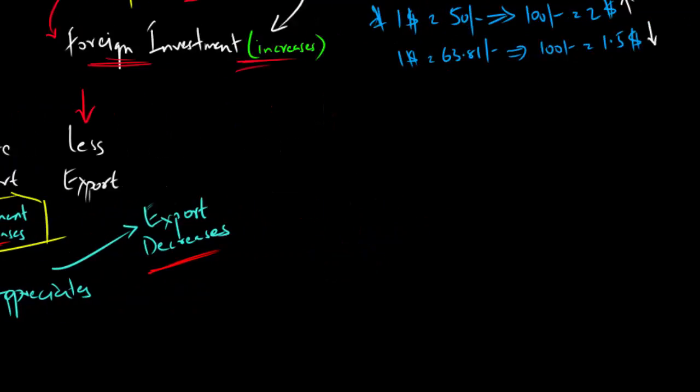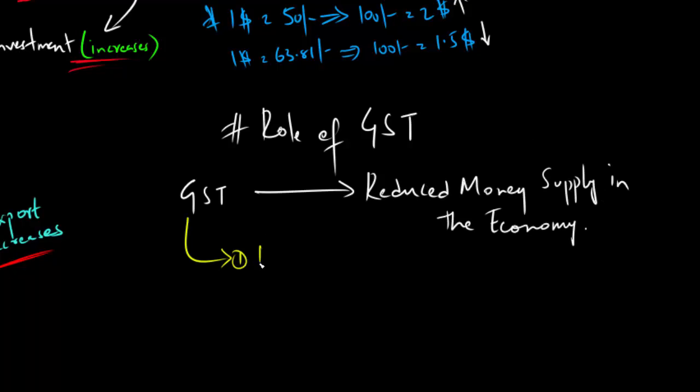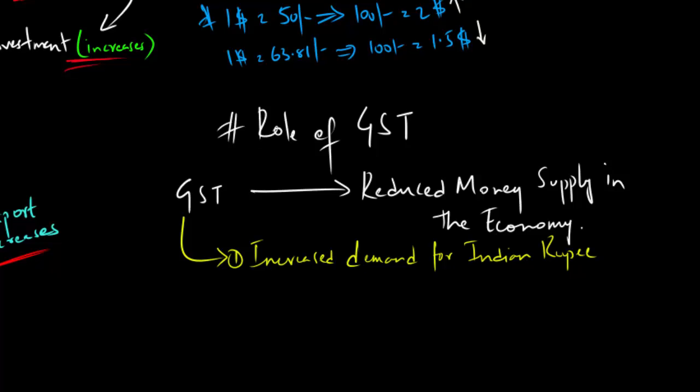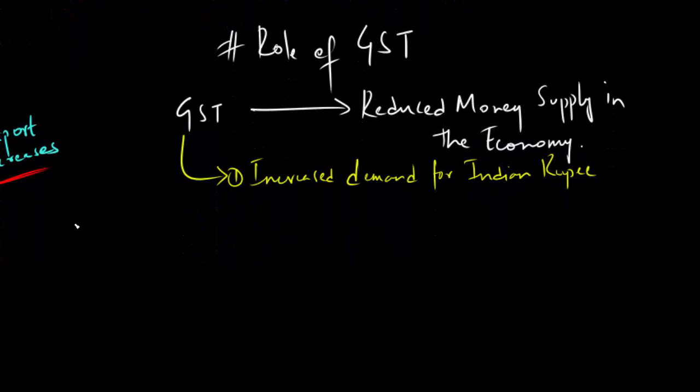Now, what did the GST do, the goods and service tax? It took out the money from the economy. And that created a huge demand for Indian rupee. Suppose if there was no GST, in an absolute normal condition, when there is no money in hand, consumers usually cut down on their spending because you'll have to realize that not everywhere you could do payments with card and digitization came along recently. It wasn't 100% developed. Anyways, if there is less money in hand, that means the demand for the local currency increases.